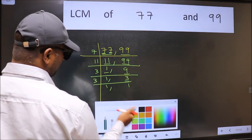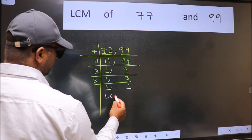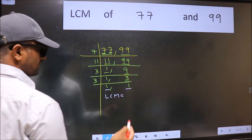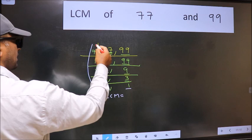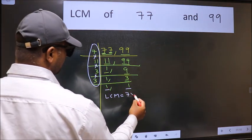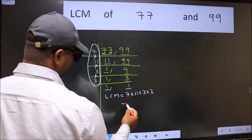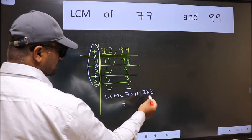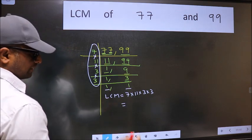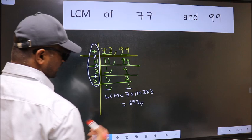So we got 1 in both the places. So our LCM is the product of these numbers. That is 7 into 11 into 3 into 3. When we multiply these numbers we get 693 is our LCM.